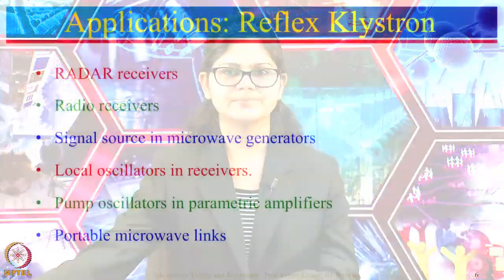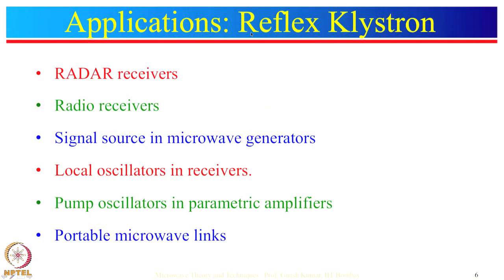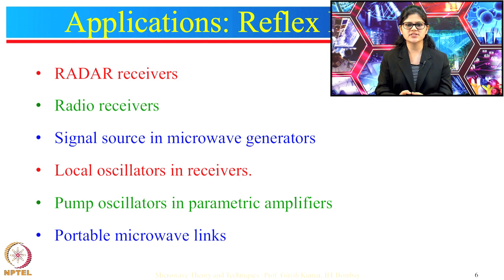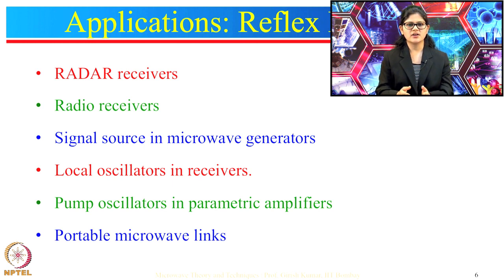Let us look at the applications of the reflex klystron. There are many applications: they can be used in radar receivers, radio receivers, signal sources and microwave generators. They are also used as local oscillators in receivers, pump oscillators in parametric amplifiers, and in portable microwave links.